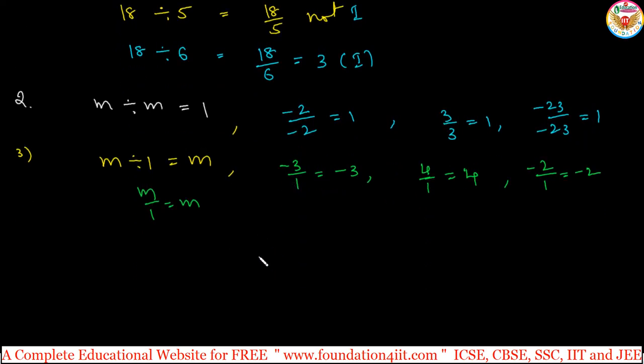And rule for 4 and 5, let us do division with 0 now. For example, 0 divided by m, 0 by any integer, you will get 0. Here also m is non-zero. For example, you take 0 divided by 3. This is 0, 0 divided by minus 2 equals 0.